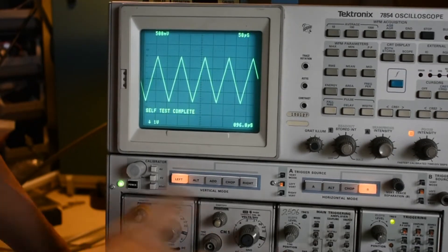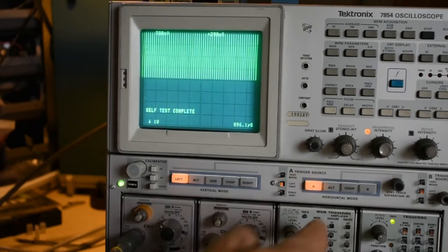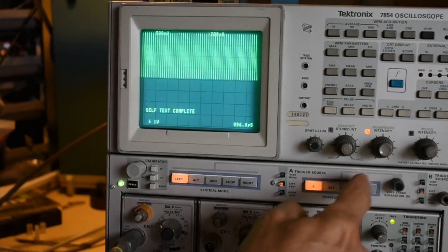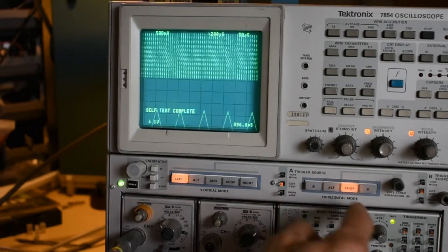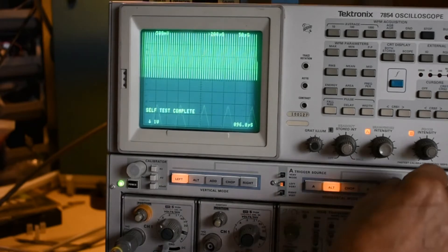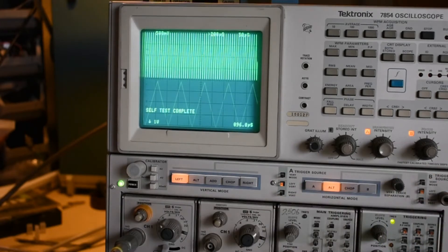These mainframe oscilloscopes can do quite a lot. You can have different time bases running. You can actually have an alternate, so basically two time bases of the same signal going on at one time.